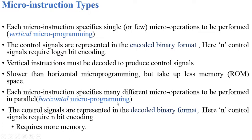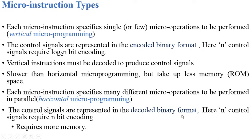In case of horizontal micro programming, each micro instruction specifies many different micro operations to be performed in parallel — a single micro instruction itself represents many micro operations. But the control signals are represented in decoded format directly, so it requires more number of bits for representation. That means n control signals are represented using n number of bits, requiring more memory space. However, it is faster than vertical programming because no decoding operation is needed — all control signals are already in decoded format.